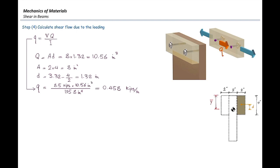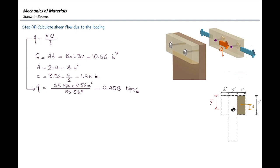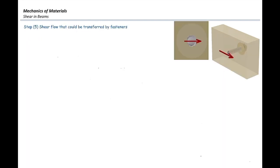The shear flow of 0.458 kips per inch is the force required per unit length of the beam to keep that piece in equilibrium. For example, over 10 inches of beam the total force would be 4.58 kips. If the parts were fully connected, we would divide the shear flow by the thickness T to get shear stress — the equation used previously. However, we cannot use that equation for bolt shear stress, because the bolts have a smaller cross-sectional area. So we must determine the force in each bolt separately.